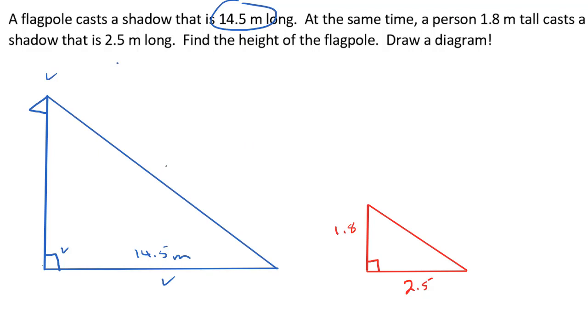Now I have two triangles, and if I can somehow show that these two triangles are similar, then I can use corresponding sides and scale factors to figure out the height of the flagpole. Are these two triangles similar?